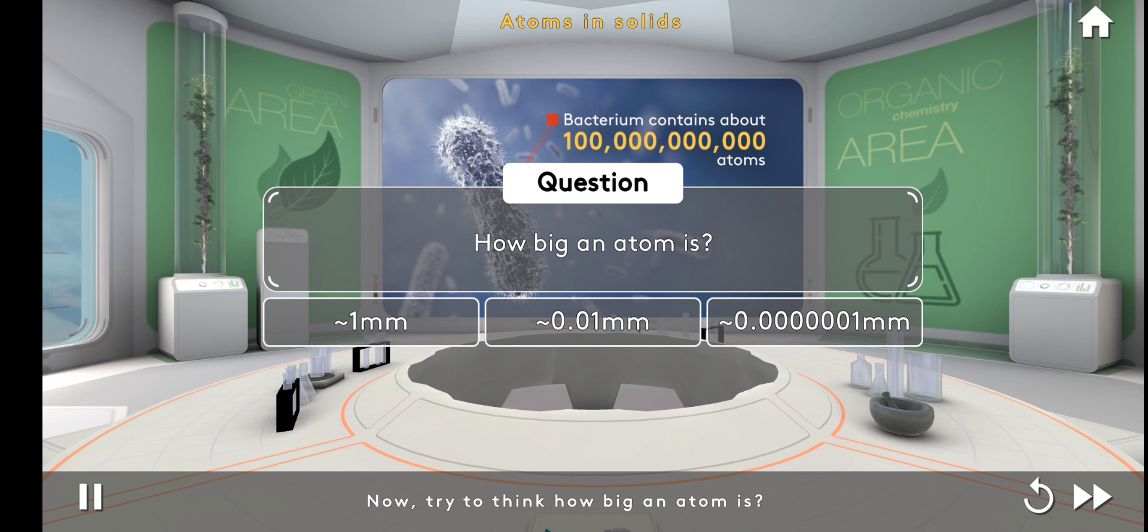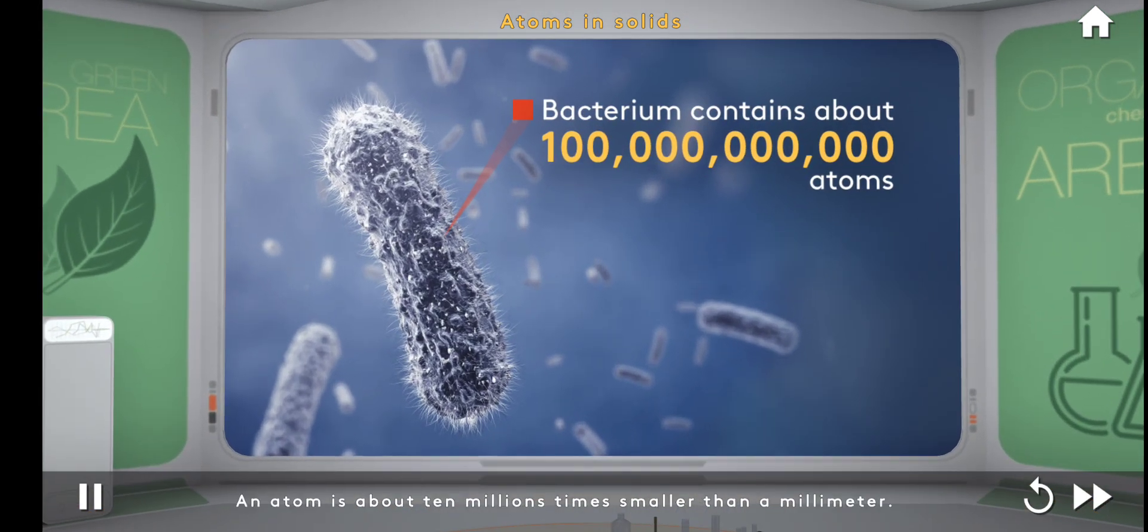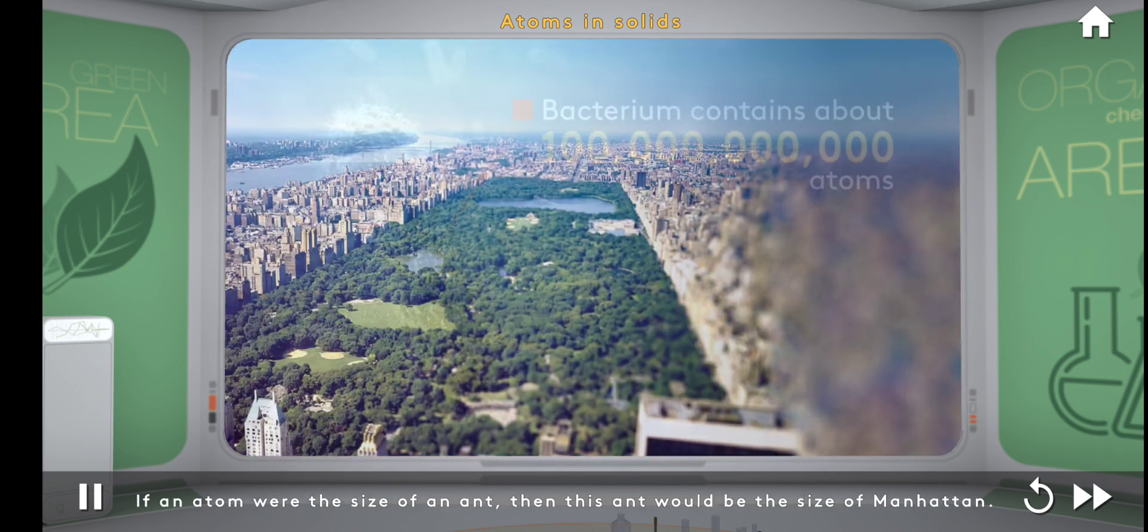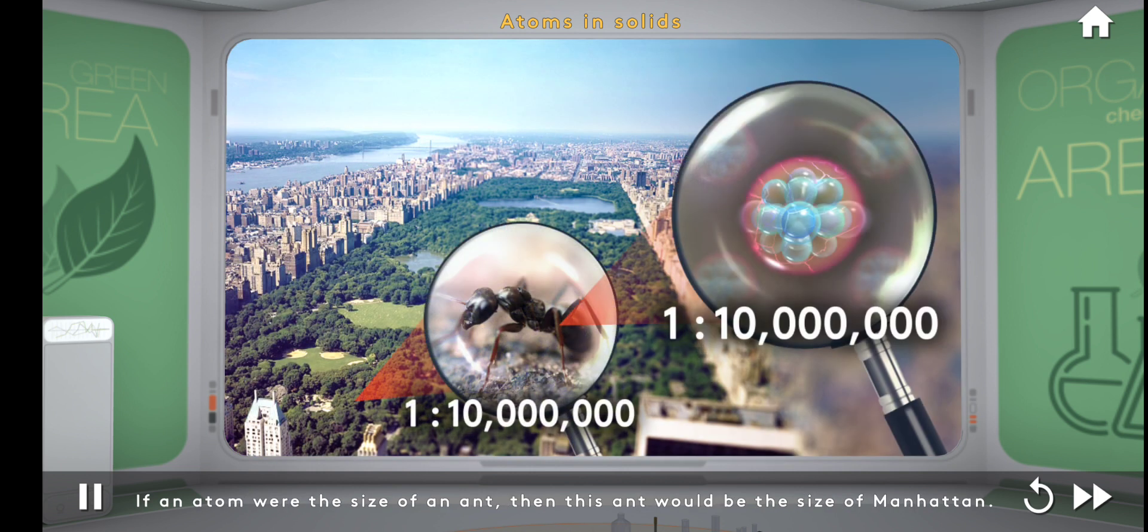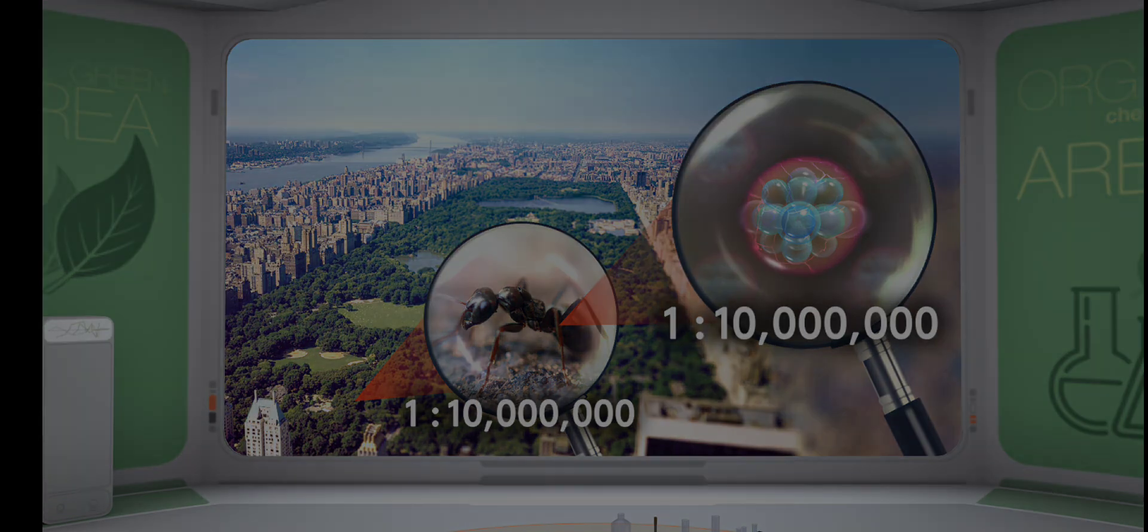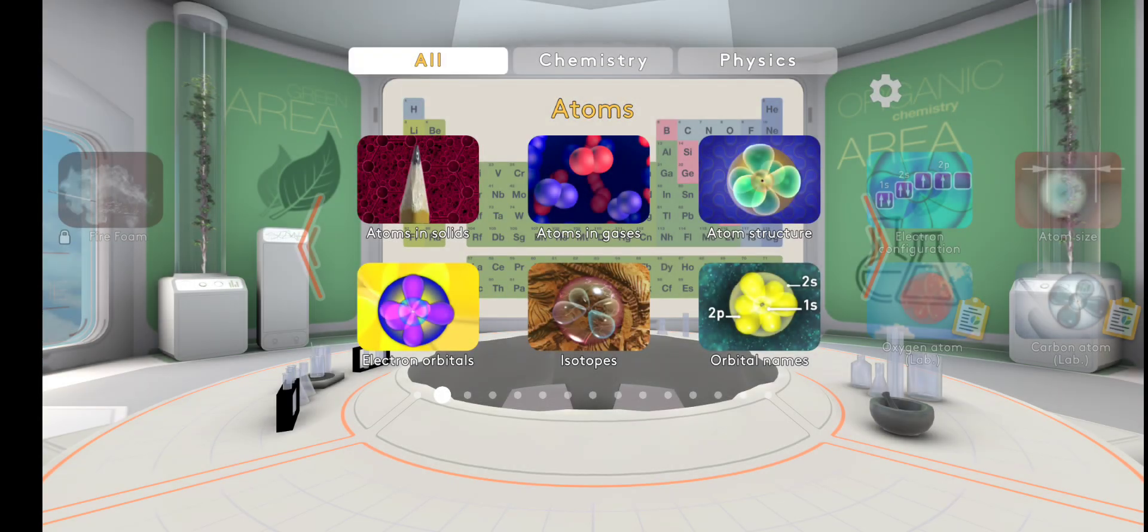Now, try to think how big an atom is. An atom is about 10 million times smaller than a millimeter. If an atom were the size of an ant, then this ant would be the size of Manhattan.